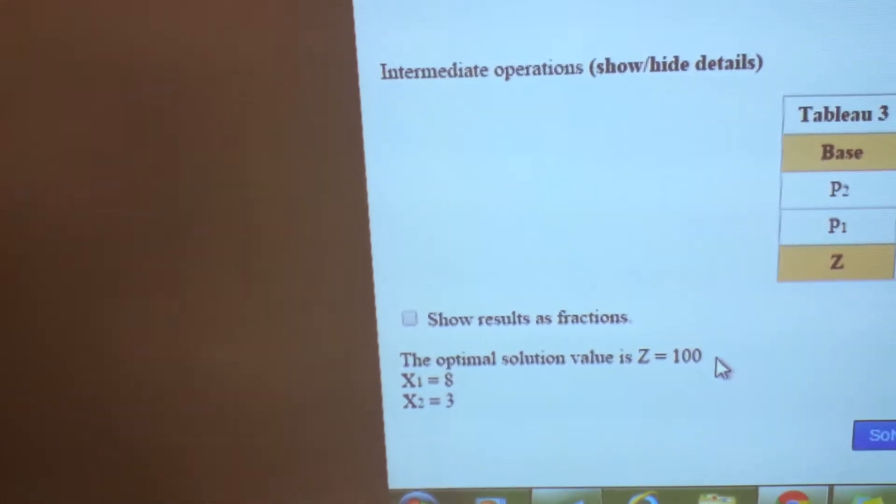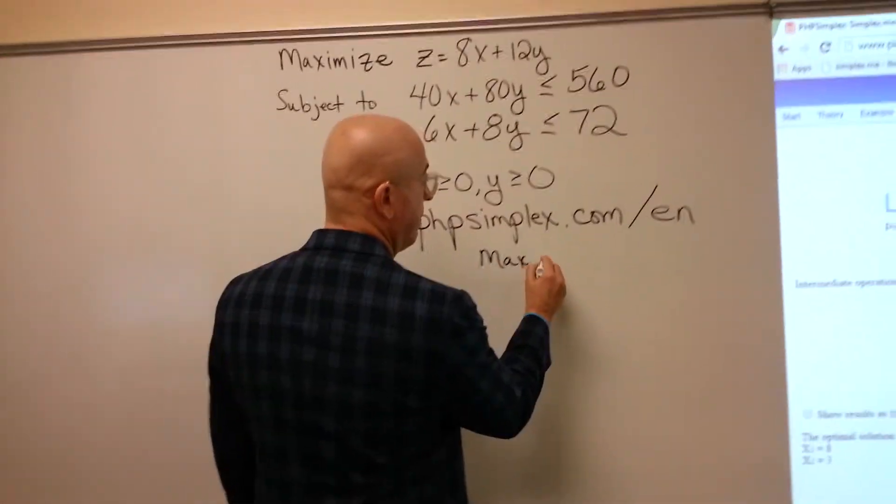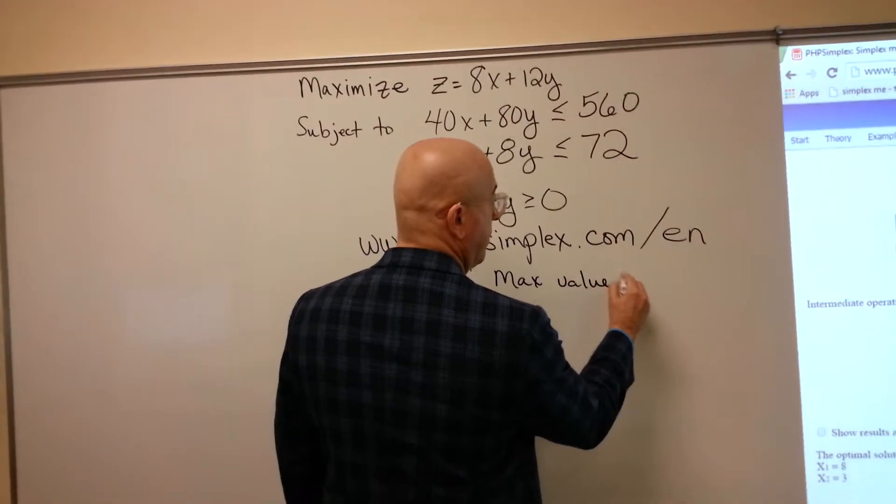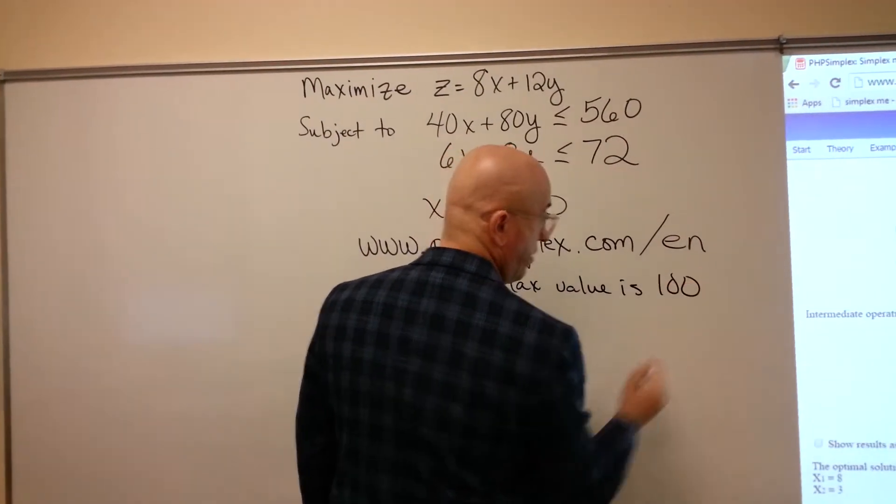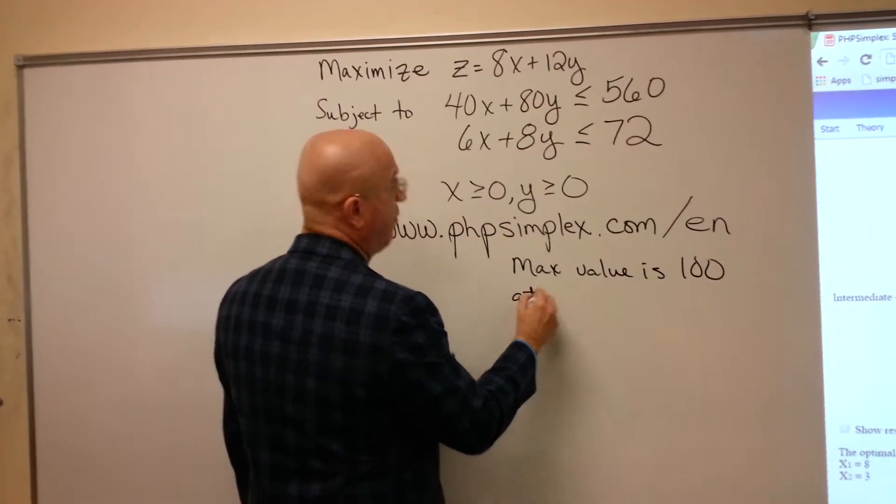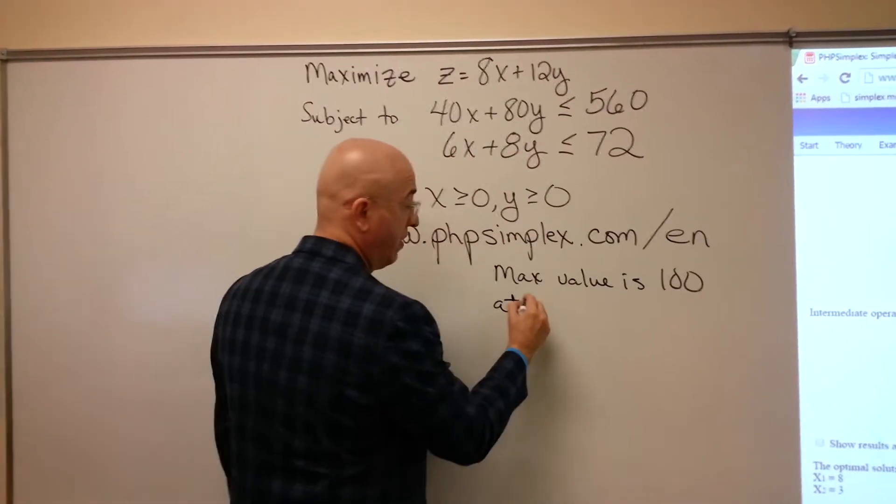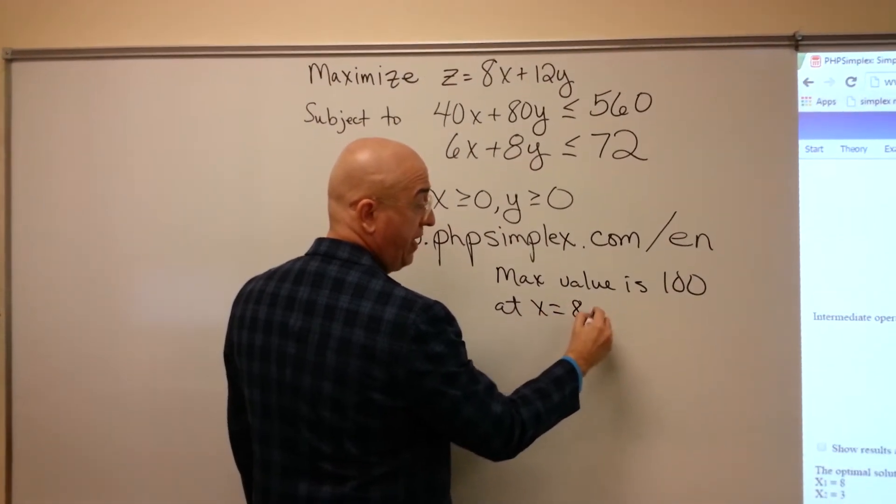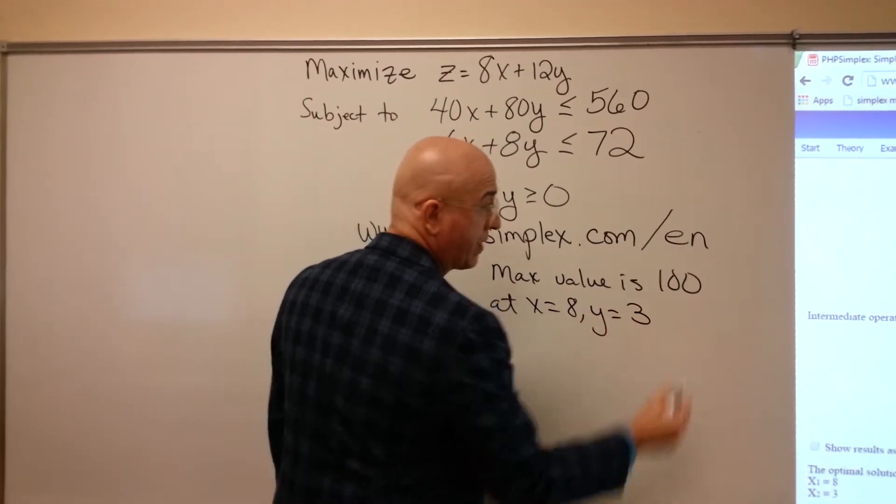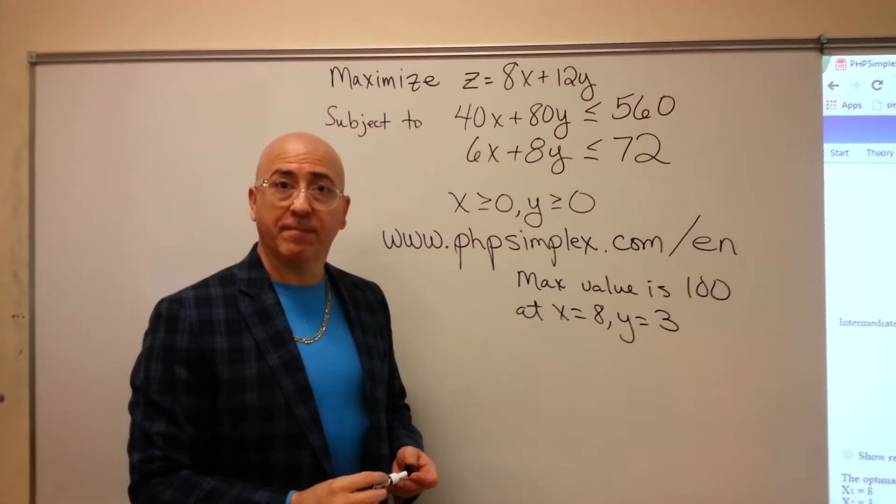So we can say, okay, the maximum value is 100 at... Now, we're using x and y instead of x1 and x2. And x equals 8 and y equals 3.